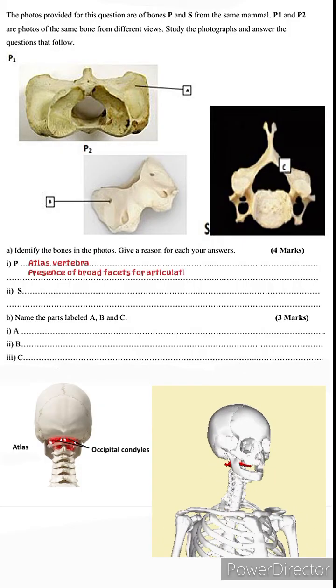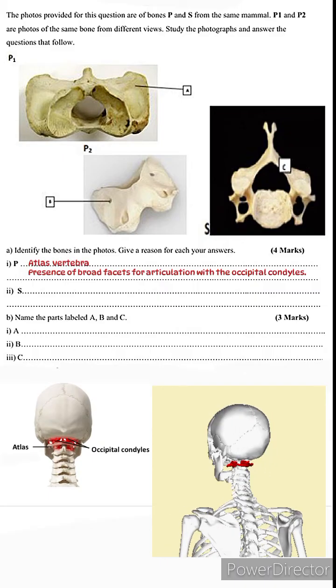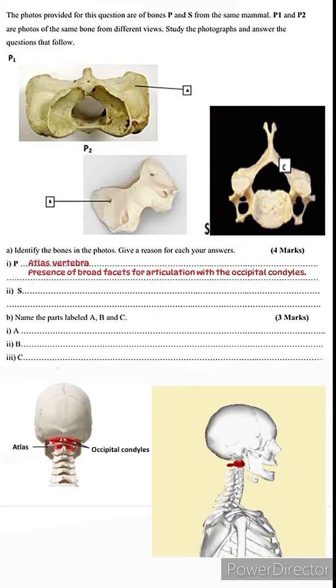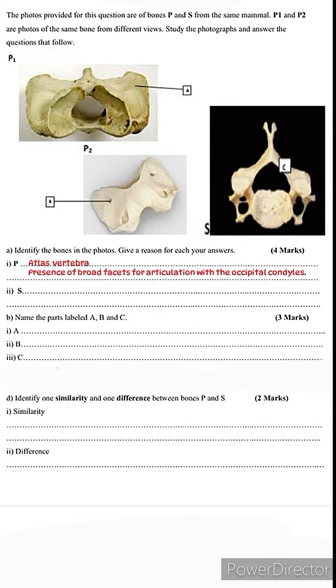Coming back to our reason, remember we're supposed to give a reason as to why bone P is the atlas. The reason is that it has broad facets for articulation with the occipital condyles. Moving on to bone S, this is a cervical vertebra. Remember, when naming, always use a singular term if it's a single bone, so never talk about vertebrae if you're referring to one bone. The reason is because it has vertebraterial canals for the passage of the vertebral artery.